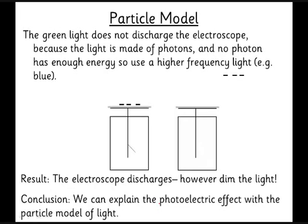So a dim blue light might knock the electrons off, even though a really, really bright green light wouldn't. Before you go and do any maths or anything else on the photoelectric effect, make sure you're clear about that principle, because really that's the underlying fundamental part that it's all about.